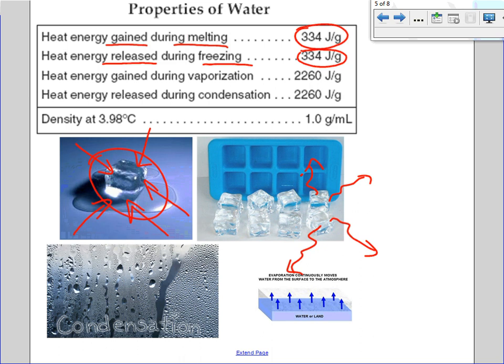This is where it requires the most energy: heat energy gained during vaporization, which is the same as evaporation. That requires 2,260 joules per gram. It requires more energy to go from a liquid phase to a gas phase.